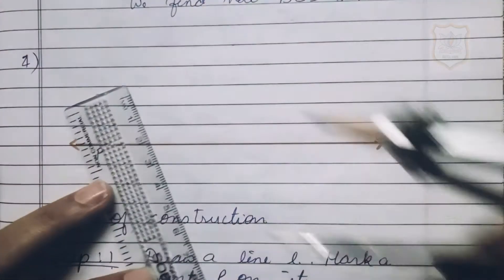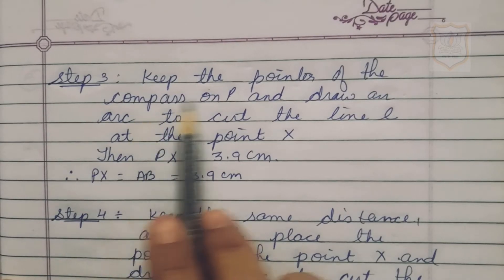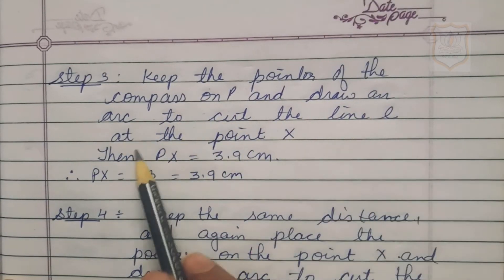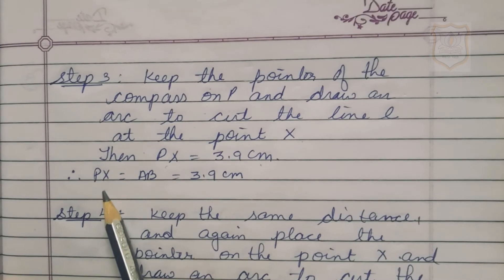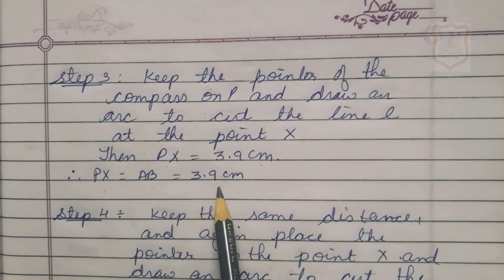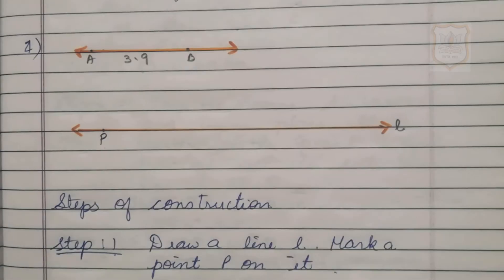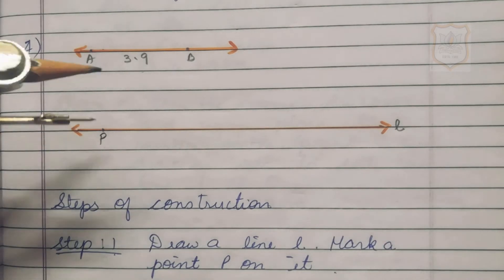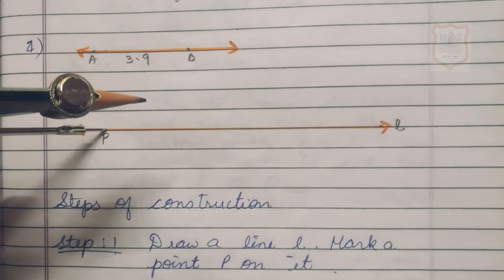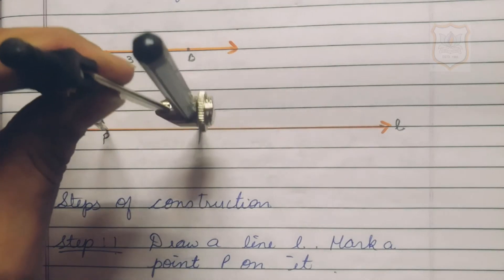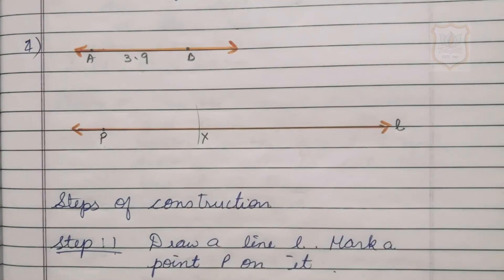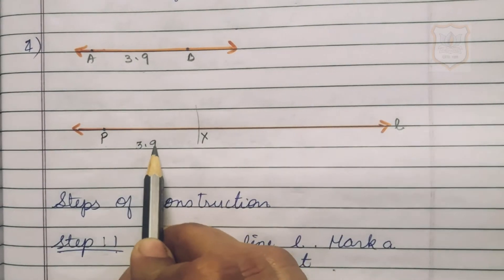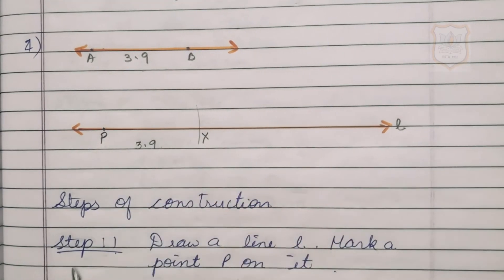Step 3: Keep the pointer of the compass on point P and draw an arc to cut the line L at point X. Then PX equals 3.9 centimeter, which equals AB = 3.9 centimeter. We keep the pointer at P, draw the arc, cut line L, mark point X, and confirm PX = AB = 3.9 centimeter.